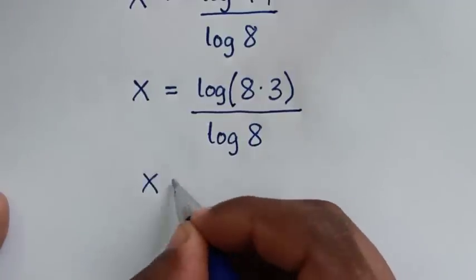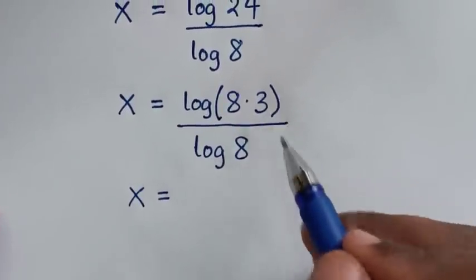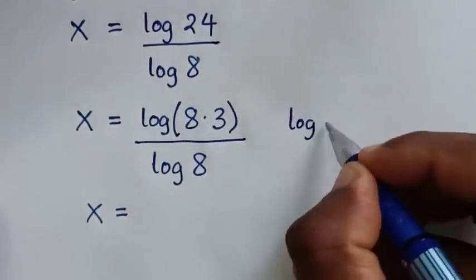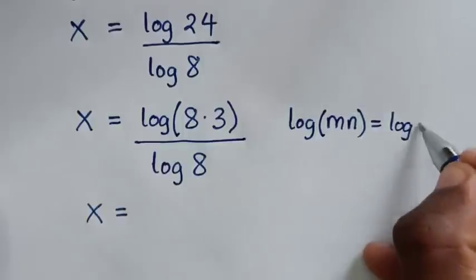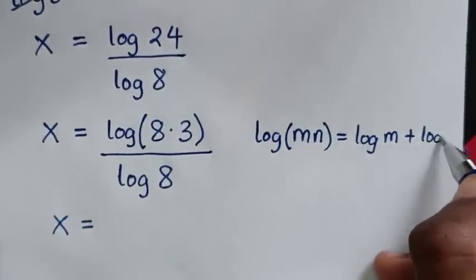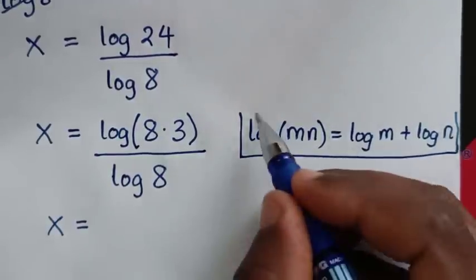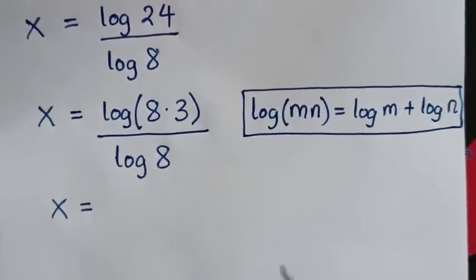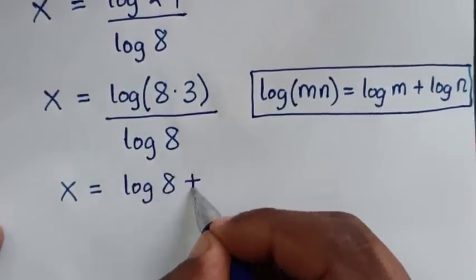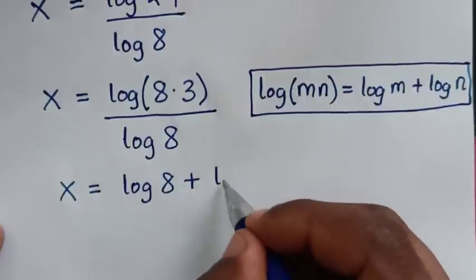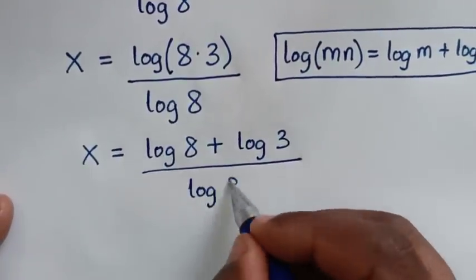So x is equal to log of 8 times 3 over log of 8. The numerator is in the form of log of m times n, which is equal to log of m plus log of n. So the numerator becomes log of 8 plus log of 3, all over log of 8.